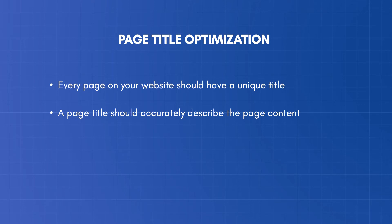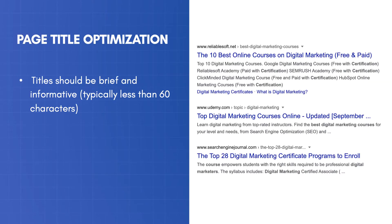The second rule is that your title should accurately describe the page content. Think of the title as a very short summary of the page that provides a strong indication to users on what the content is all about. Don't try to trick them by providing a title that is not supported by the content. You'll lose trust with your users, and it's a bad SEO practice.